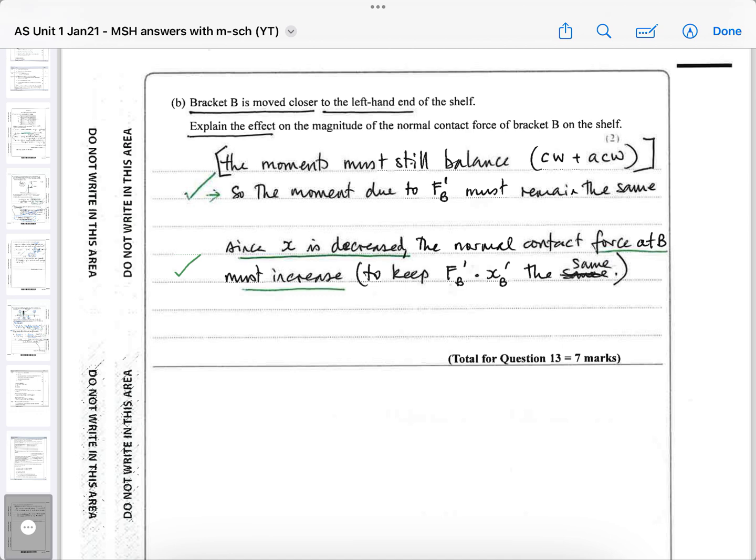Otherwise the shelf will fall down, it will topple. Since X is decreased, the distance from the left hand side to bracket B, since you're decreasing it by moving it closer to the end, the normal contact force at B must increase to compensate for the lower distance.